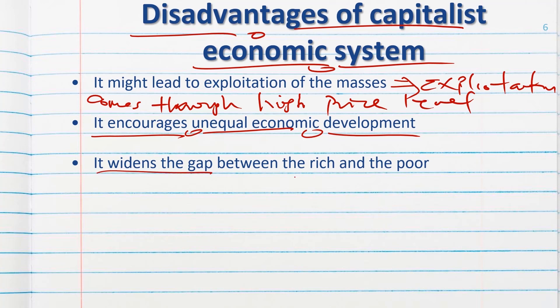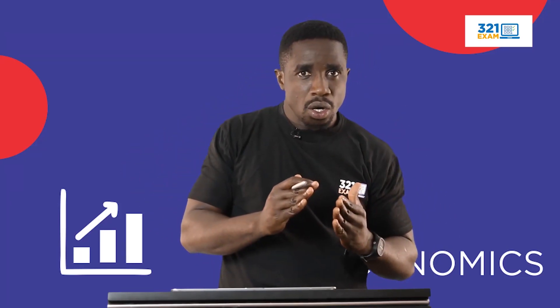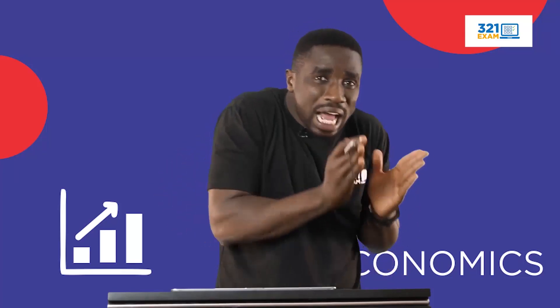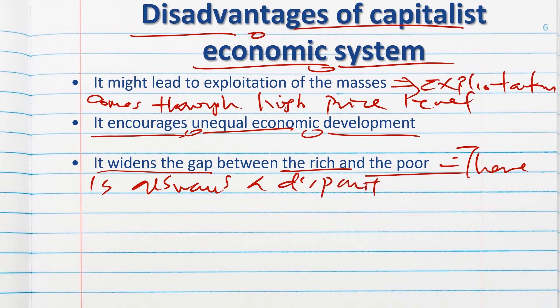Number three, it widens the gap between the rich and the poor. In the capitalist economic system, where the rich live, the cars they drive, the hospitals and facilities they use — these are actually different from what the poor uses. Resources are in the hands of a few individuals, creating a disparity between the rich and the poor.